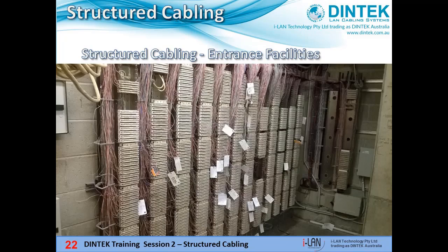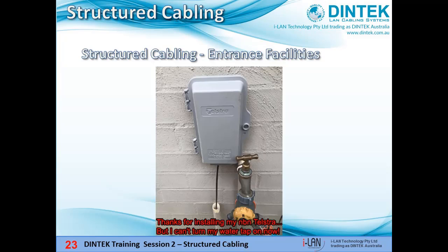This is what the entrance facility looks like in a large commercial building. You can see all of the carrier's red and white jumper wires connecting the building's telephone system into the carrier's network. Here we'd also find optic fibre links to other buildings in a campus situation. And this is what the home version of entrance facilities usually looks like. Note that gap between the conduit and the bottom of the enclosure — it's done quite deliberately to prevent any gases or water in the underground network from entering the customer premises. In the case of water it's particularly important when the building is below street level.